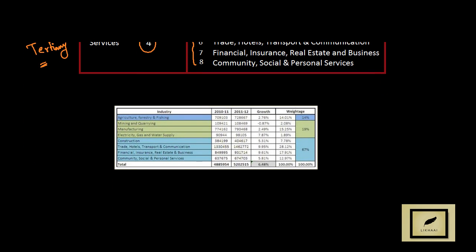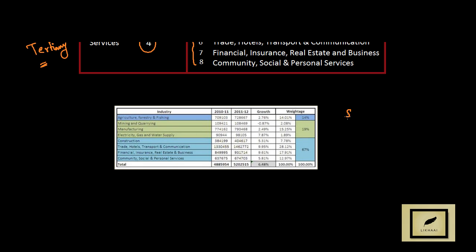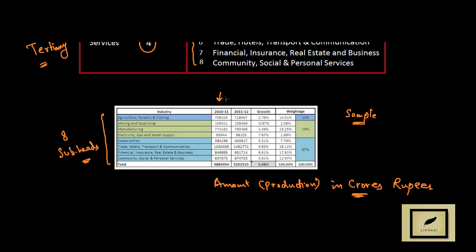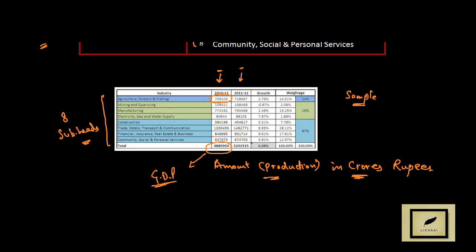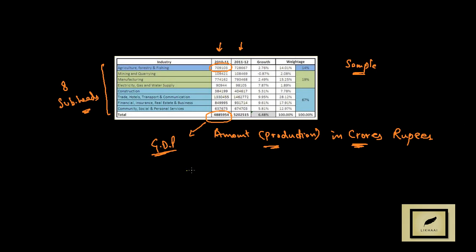On the basis of these eight sub-heads they calculate the value of the GDP. Here I have a sample of the calculation showing eight sub-heads with production amounts in crore rupees for the years 2010-11 and 2011-12. These figures tell you the value of the product, and the final figures tell you the GDP of the economy — the Gross Domestic Product calculated via the Product Method.